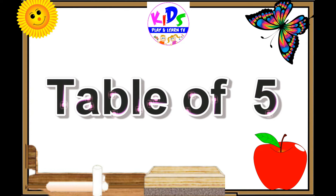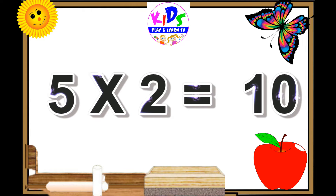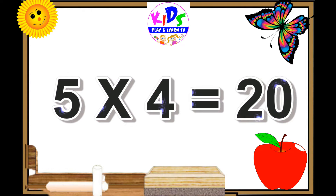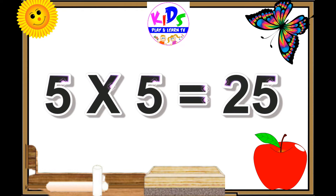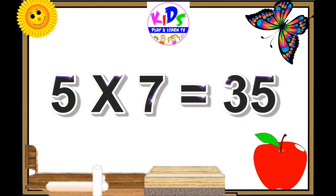Five ones are five. Five twos are ten. Five threes are fifteen. Five fours are twenty. Five fives are twenty-five. Five sixes are thirty.